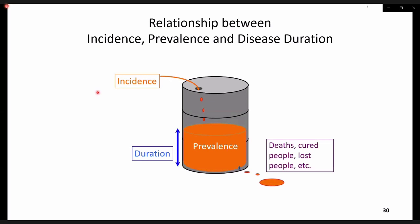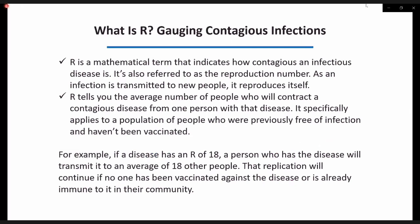As part of today's lecture, I am including a presentation to graphically show the relationship between incidence, prevalence, and disease duration. Imagine a container partially filled with an orange liquid representing prevalence. The height of the liquid is measured by the blue arrow, which represents the duration. The droplets of orange liquid entering the container represent incidence. Some of the liquid coming out of a hole may represent deaths, cured persons, lost persons, and others.